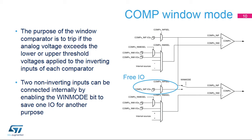The purpose of the window comparator is to trigger an interrupt if the analog voltage goes beyond the defined lower and upper voltage thresholds applied to the inverting inputs of each comparator. This event can generate an interrupt through the EXTI line. Two non-inverting inputs can be connected internally by enabling the win-mode bit, therefore saving one I/O for another purpose.